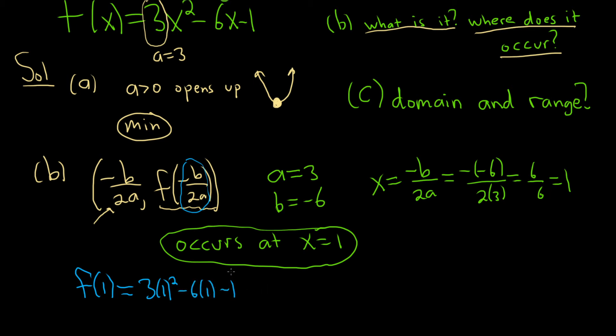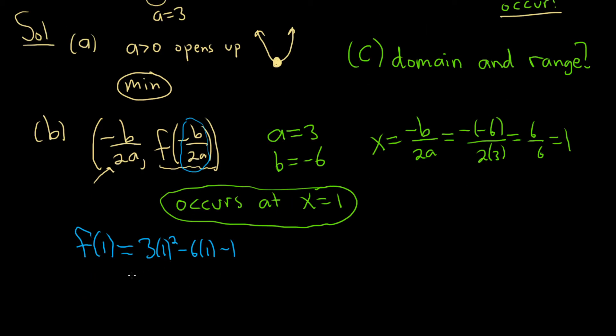So that's going to be, let's see, 3 minus 6 minus 1. So minus 3 minus 1, so minus 4. So that's going to be the actual minimum. So the minimum is always the y value, really important. And where it occurs is the x value.